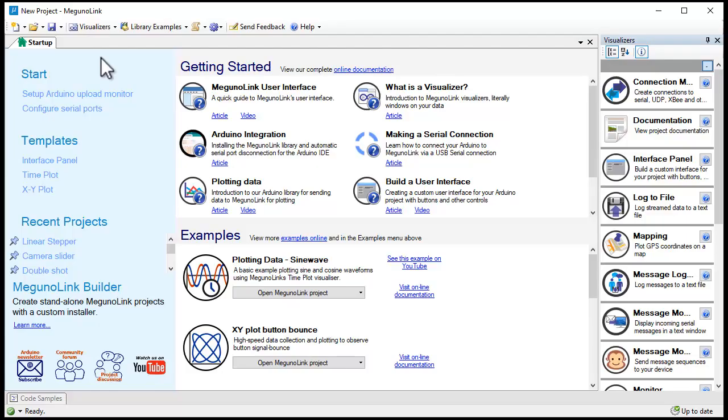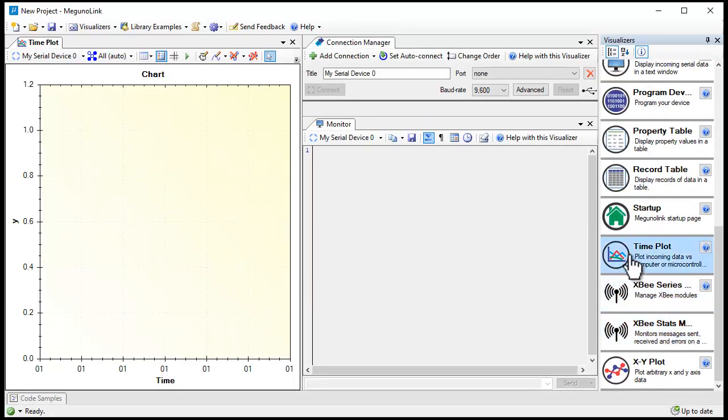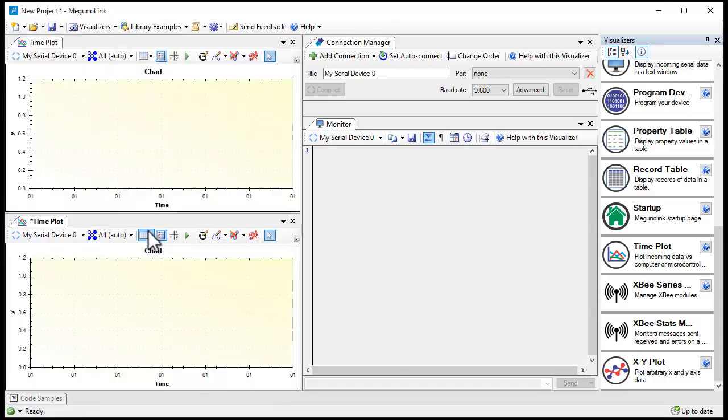In the visualizer, I'll start a new project using the plot template. Then add a second plot so we have one for each channel. MagunoLink discovers new channels automatically, so I'll set up and open the connection.